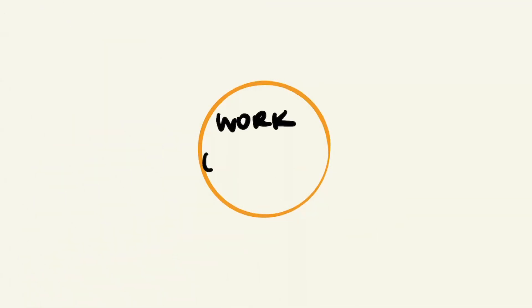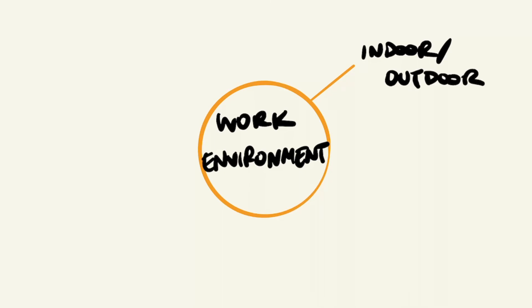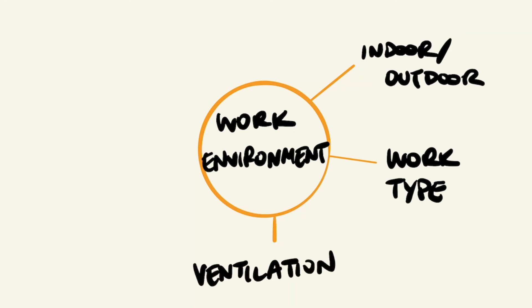The next set of questions asks the worker to describe their workplace environment — for example, is it an indoor or outdoor environment? What sort of work is being performed? You would then ask if there are adequate controls in place to minimise exposures — for example, is it adequately ventilated? You would also ask what type of ventilation systems are in place and whether they are working. In terms of PPE use, you would ask workers whether they are compliant, whether the equipment fits properly, and whether it is regularly maintained.